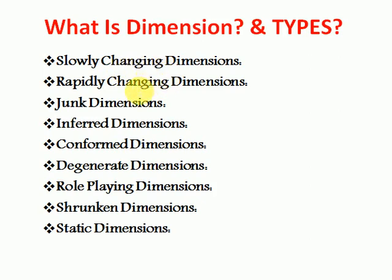Rapidly changing dimension is another type, similar to slowly changing, but here a huge amount of data is getting changed frequently and you are storing that data — that is called rapidly changing dimension. Junk dimension means if you have a rapidly changing dimension table that is very large and you are not able to store all the data, you can split out some of the flags or underused columns and create another dimension. That dimension will have only flag-related columns, and it will be called a junk dimension.